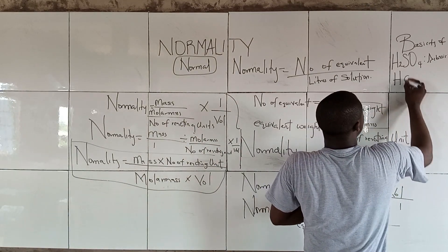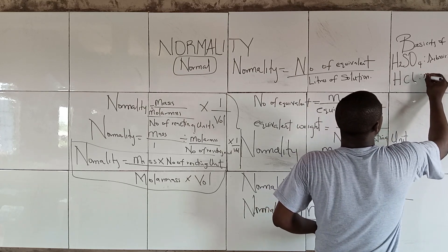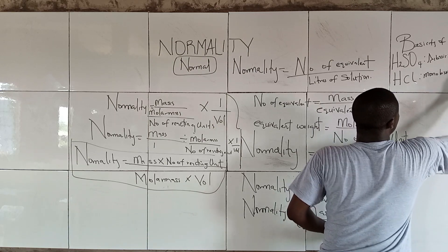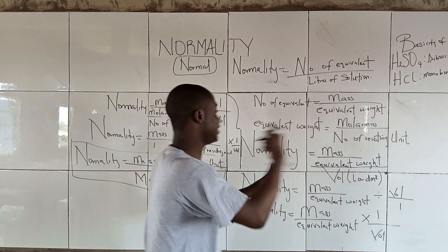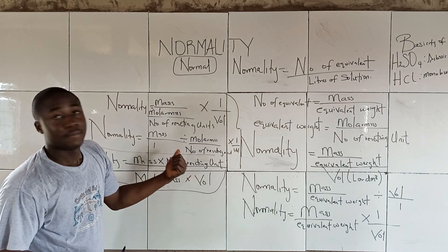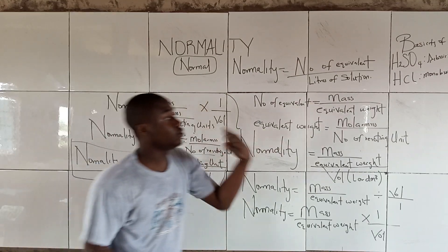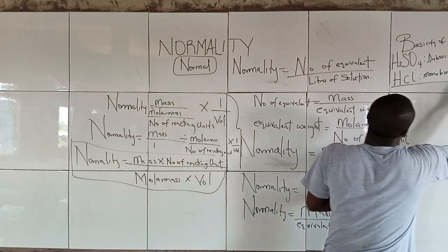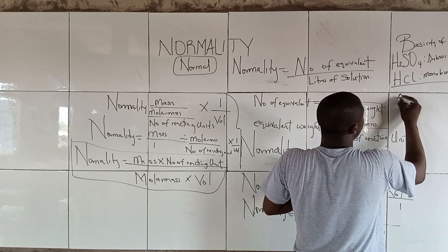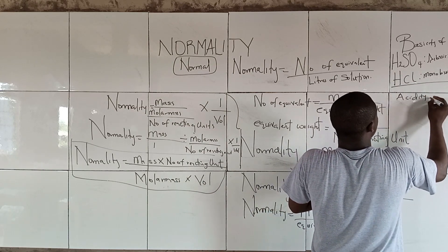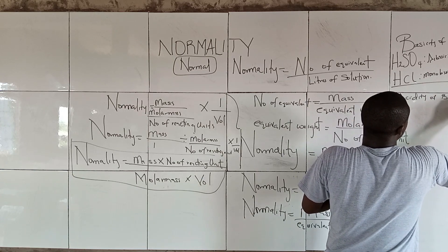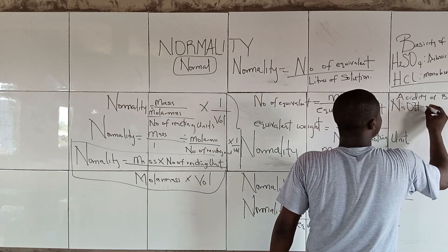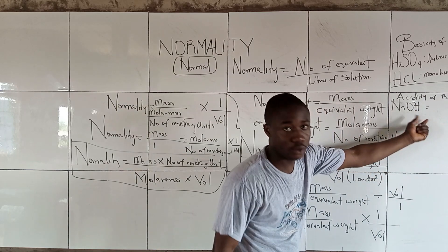For HCl, it is monobasic — or monoprotonic — so its number of reacting units is 1. Now talking about bases, we regard it to the acidity of bases. Sodium hydroxide has one hydroxyl group, so it is monoacidic, giving a number of reacting units of 1.